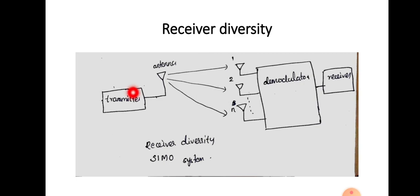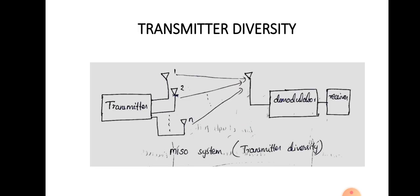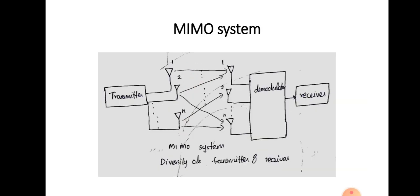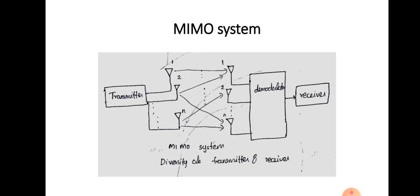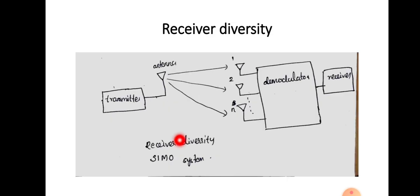Here is a diagram showing a transmitter and receiver. Diversity is attained by using multiple antennas — sometimes at the receiver side only, sometimes at the transmitter side only, and sometimes at both. Based on that, different systems are obtained: MISO (multiple input single output), MIMO (multiple input multiple output), and SIMO (single input multiple output). In all these cases we achieve diversity, meaning we have an option to select from the received signals.